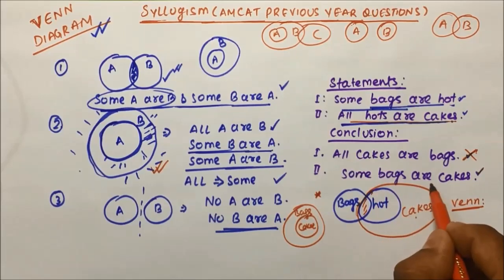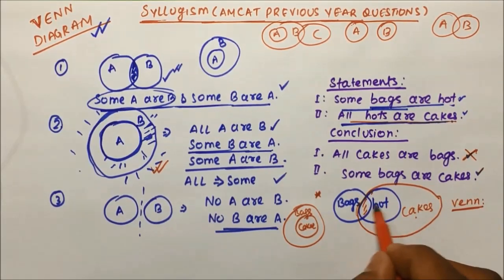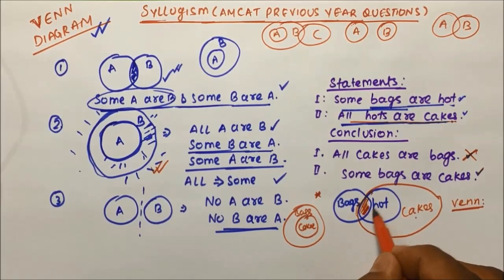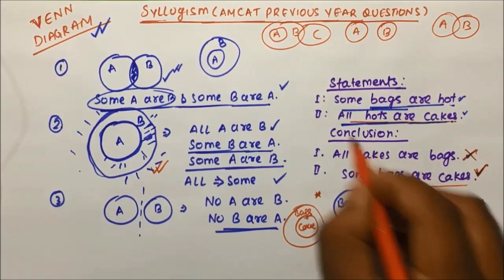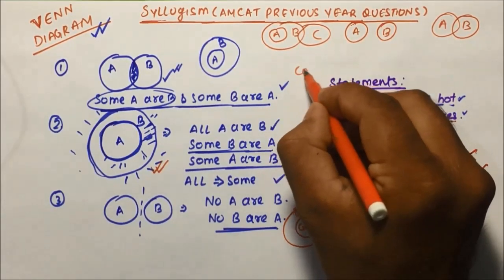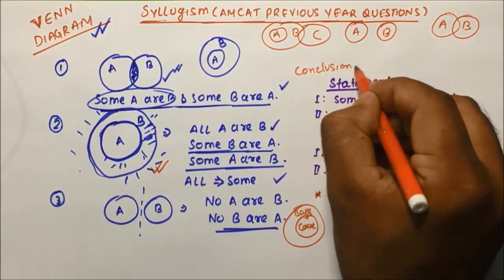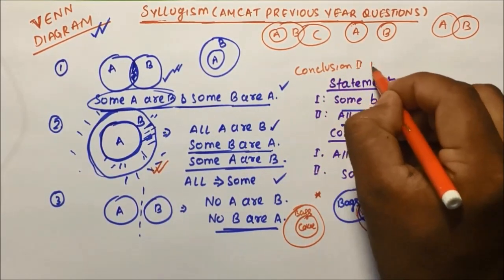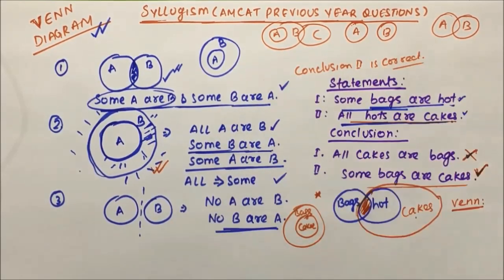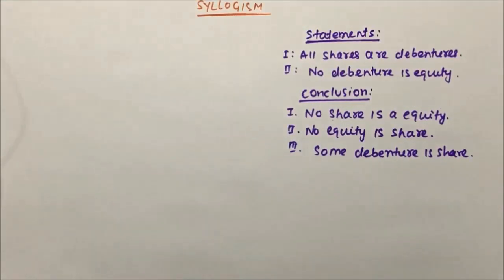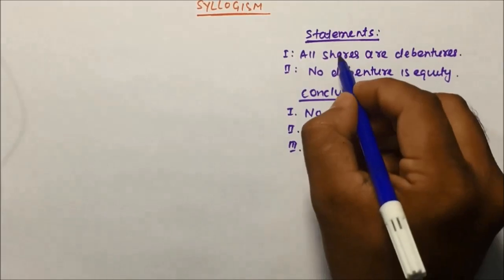Conclusion two: 'some bags are cakes.' Yes — some part of bag is in cake and some part of cake is in bag, so conclusion two is true. Therefore, conclusion two is correct.